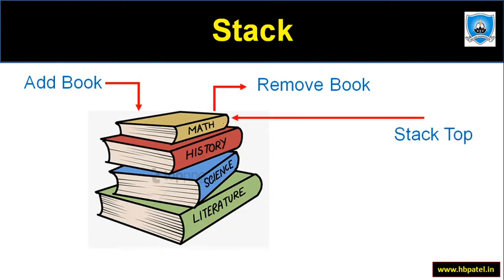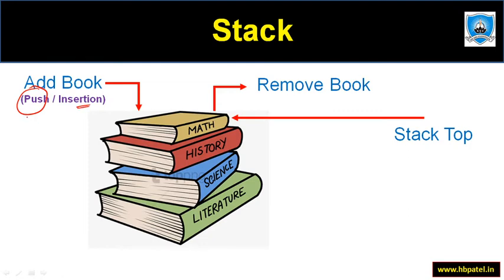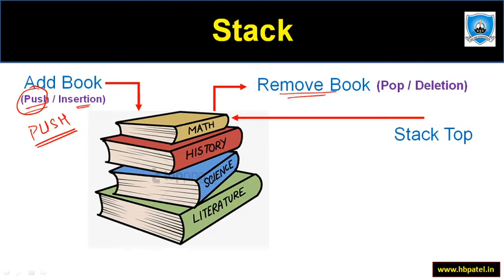This is the top of the stack. If I remove the maths book, the top would point to the history book. If I add one more book, the top changes accordingly. So the stack has the property that there is only one end — the top — where a book is added or removed. Addition is known as a push operation, and removal is known as a pop operation. Push is adding something onto the top; pop is removing from the top.